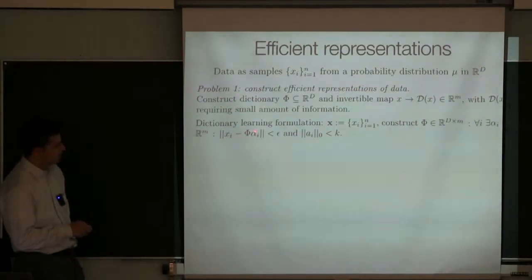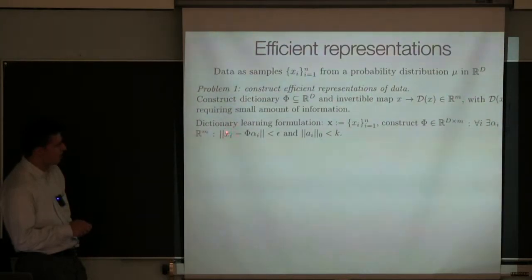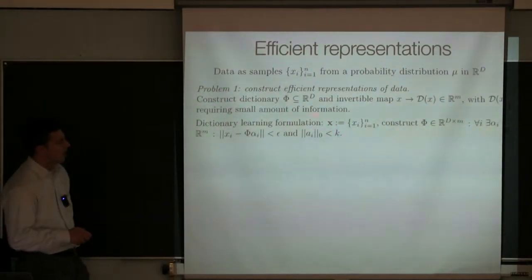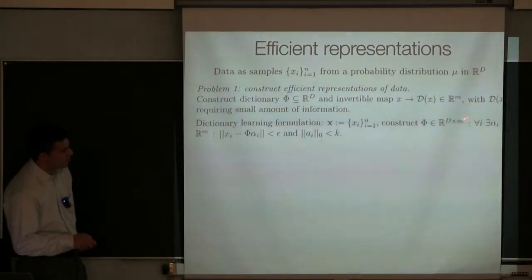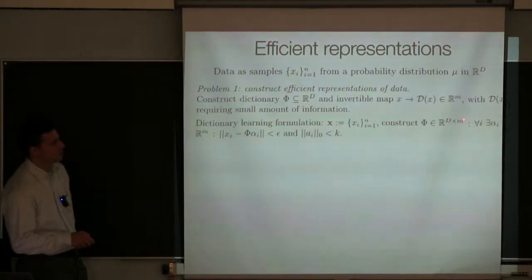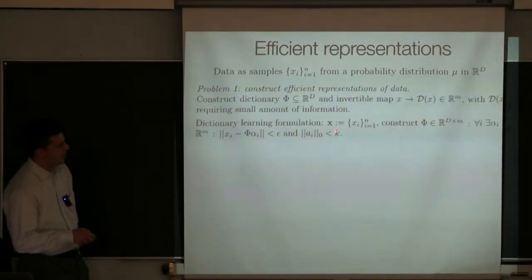If I can do that, in a certain sense I've compressed my data, because instead of requiring capital D numbers to encode that vector, I'm going to need only a number of numbers no larger than K. So K should be small compared to M, and in practice M turns out to be comparable to D in what people usually do. But M could be much smaller than capital D, or it could even be larger — but then you want K really small.